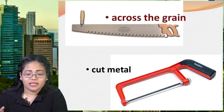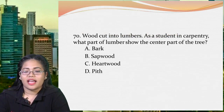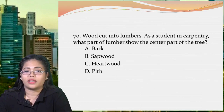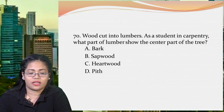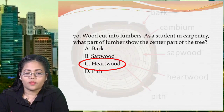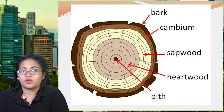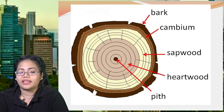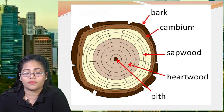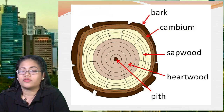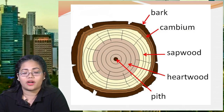Next: when wood is cut into lumber, what part shows the center part of the tree? A: bark, B: sapwood, C: hardwood, or D: pith. The correct answer is letter C, hardwood. The bark is the outermost layer of the tree. The cambium separates the bark and sapwood and is responsible for secondary growth. The sapwood is the largest part found in the middle. The hardwood is the inner part where all dead cells of the wood are found. And the pith is the tiny center dark spot.